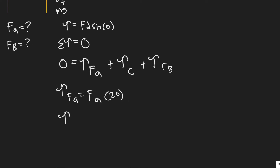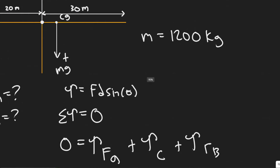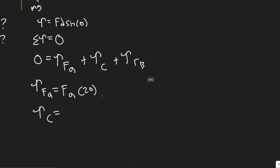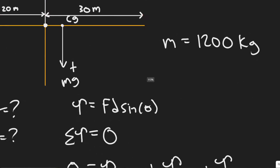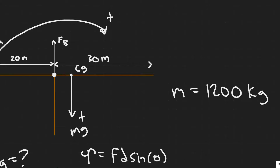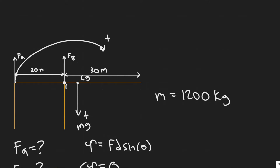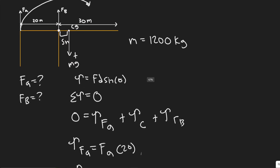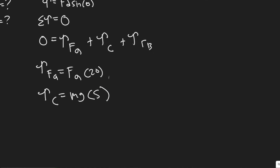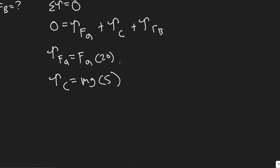The torque due to the structure's weight is mg times the distance from the pivot to the center of gravity. The total length is 50 meters, so the center is at 25 meters. The pivot is at 20 meters, so the distance from the pivot to the center of gravity is 25 minus 20, which equals 5 meters. So the torque due to weight is 5mg.